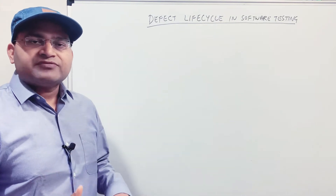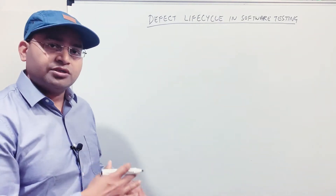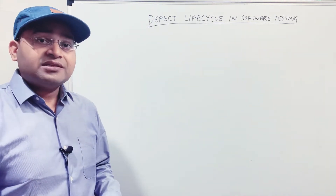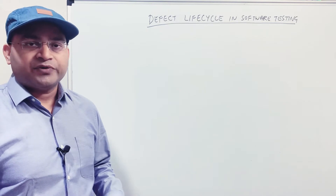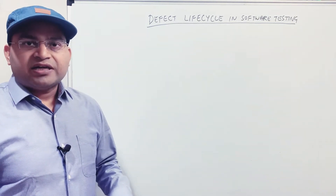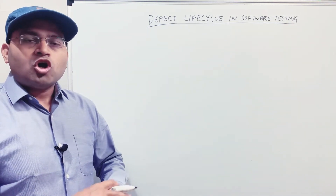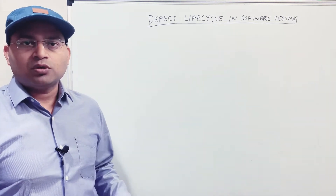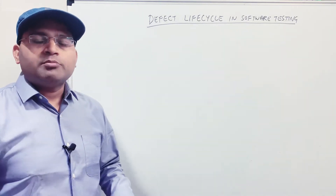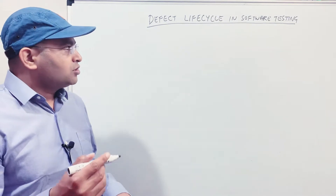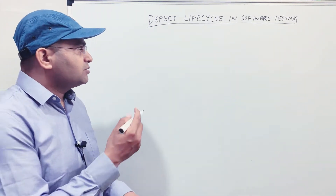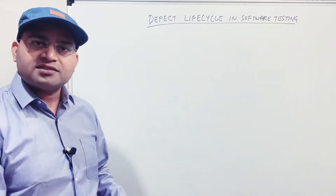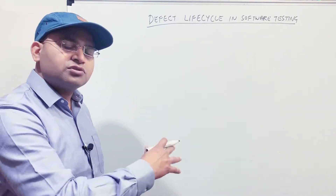The defect lifecycle has certain states and resolutions within it — these two things you need to remember: statuses and resolutions. There are some very common statuses used across any project you work with. In this tutorial, we will discuss what the defect lifecycle is, the important statuses, and how the defect flows from the new status to closure.